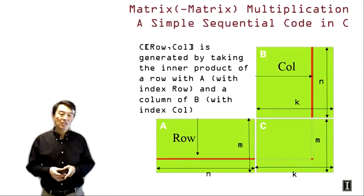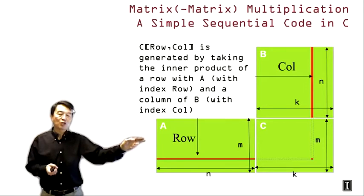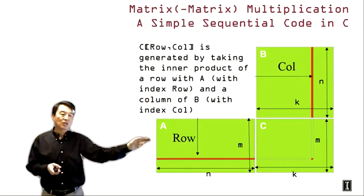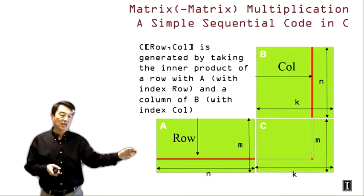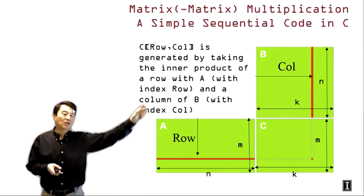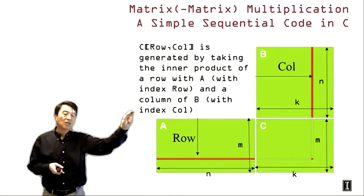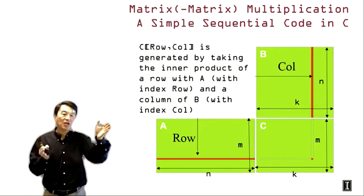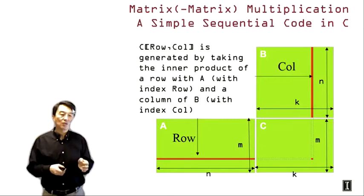In all the discussions today we will assume matrix A is of dimension M×N, matrix B is of dimension N×K, and we generate a C matrix of dimension M×K. The N dimension — the number of elements in a row of A and the number of elements in a column of B — must match because we are doing a dot product. We will use these variables M, N, and K consistently throughout all examples in this lecture.